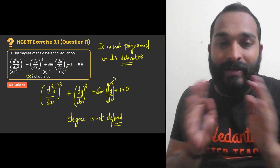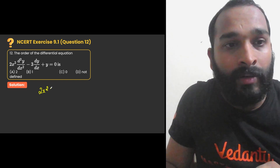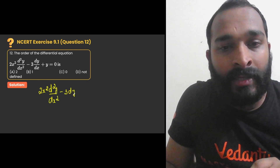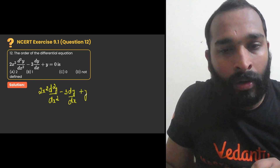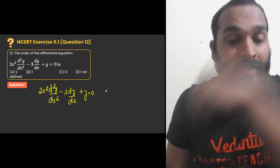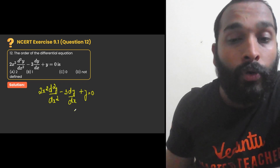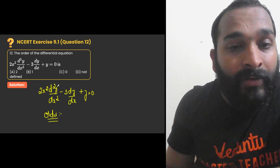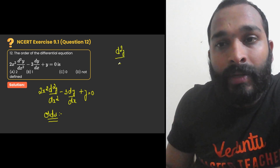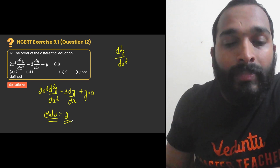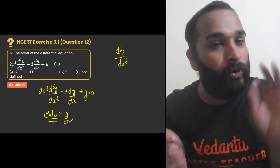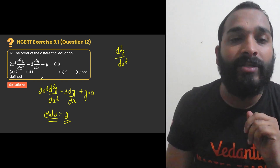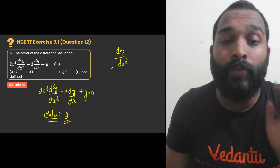Look at this. The given differential equation is 2x² times d²y/dx² minus 3 times dy/dx plus 4 equal to 0. They are asking us to find the order. We check the highest derivative: the highest derivative is d²y/dx², so order is 2. It is also a polynomial in its derivative, so if they asked for degree, degree would be 1 — the power of d²y/dx².